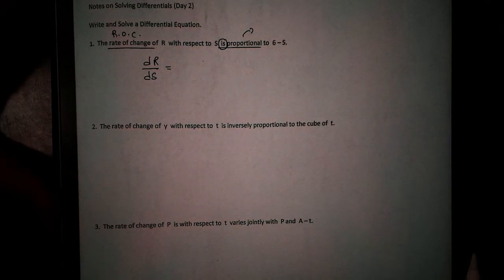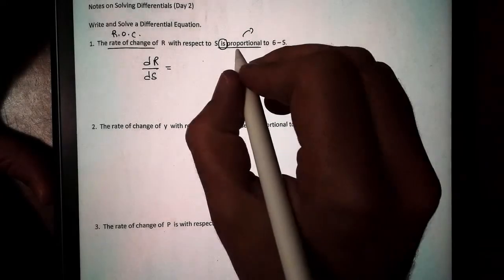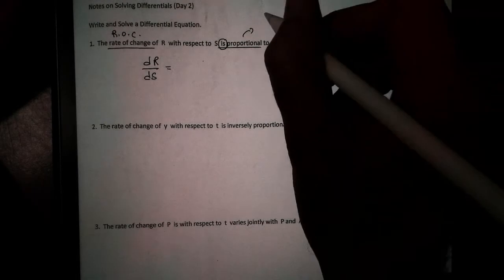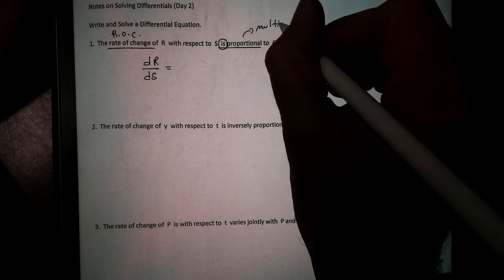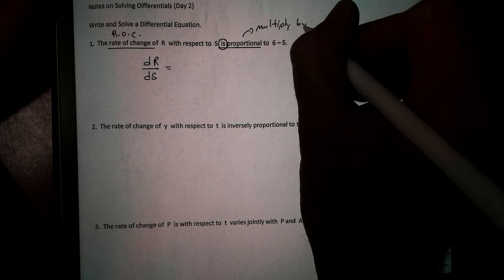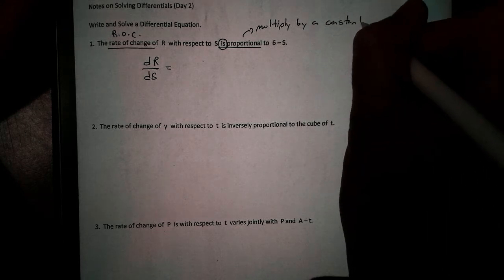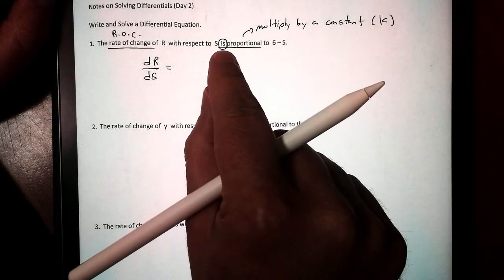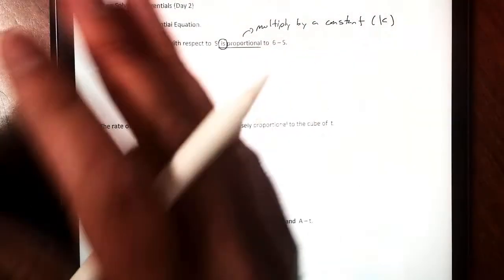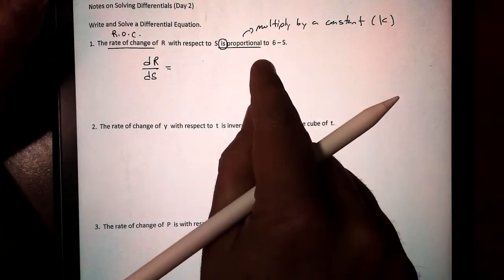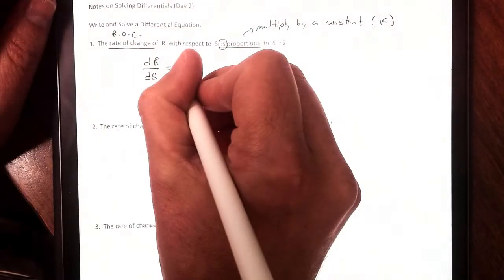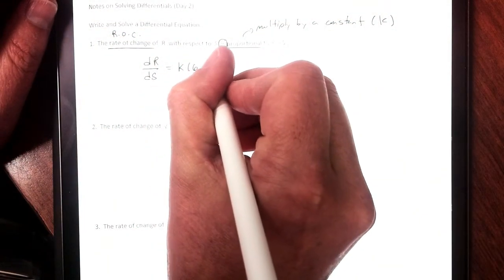Then we have this phrase proportional. That means we are four-portional—I'm joking. Proportional means that we're going to multiply it by a constant. That's from Algebra 1. So we're going to multiply it by some unknown value, and we're going to call that value K for now. So the derivative is proportional to some constant K times the 6 minus S. So we're going to go K times 6 minus S.